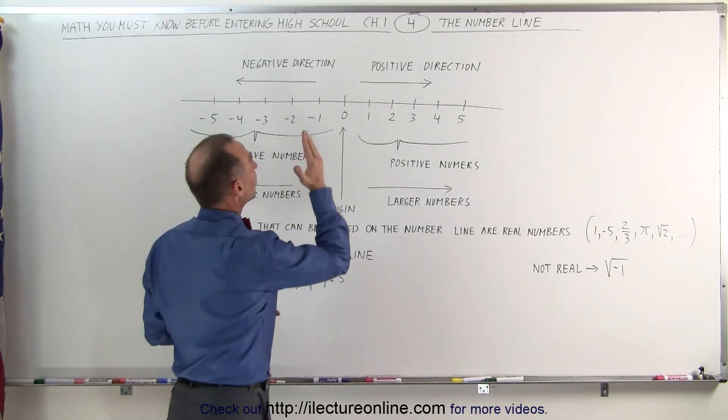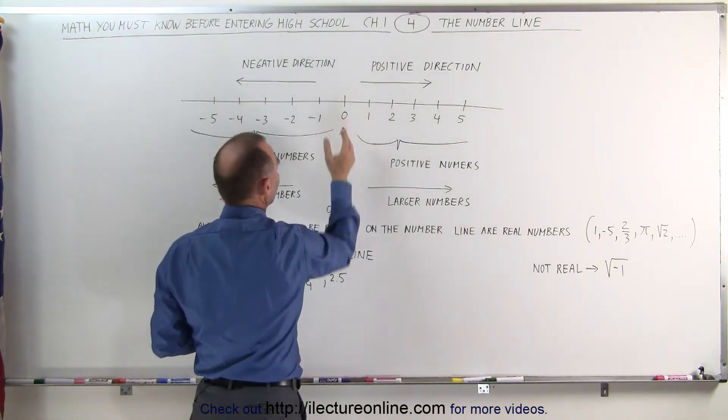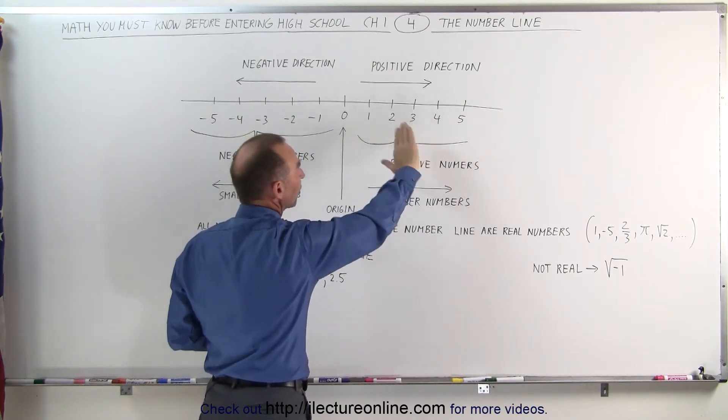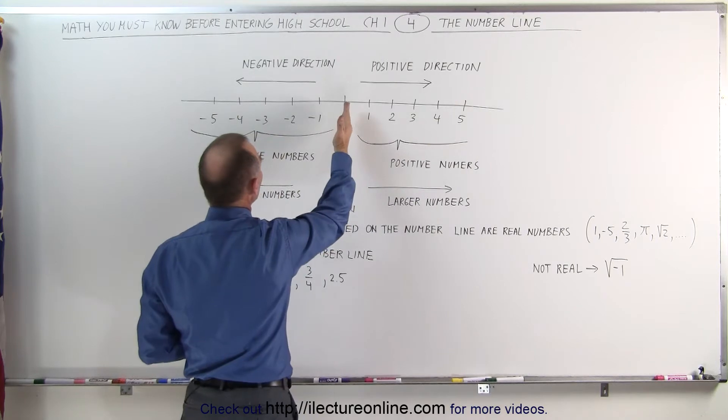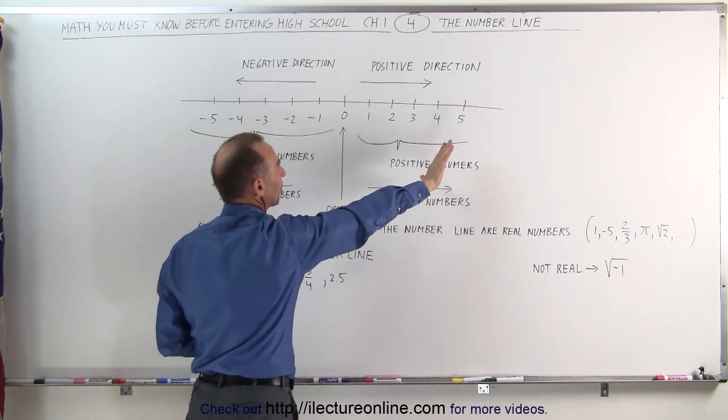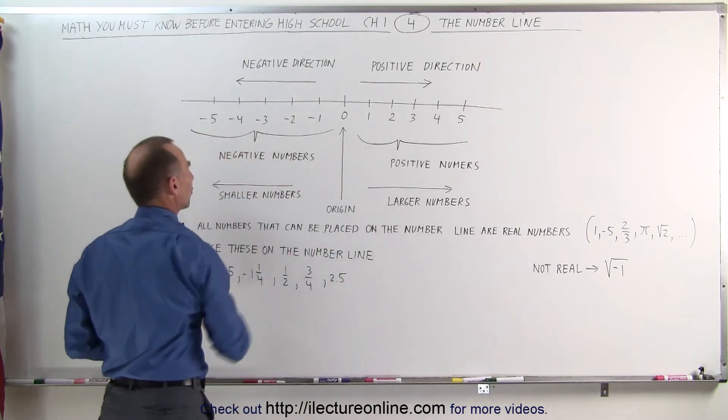Notice that in the middle of the number line we have the number zero. That's called the origin. All the numbers to the right are positive numbers, they're greater than zero. All the numbers to the left are negative numbers, they're smaller than zero. So the positive numbers are to the right, the negative numbers are to the left.